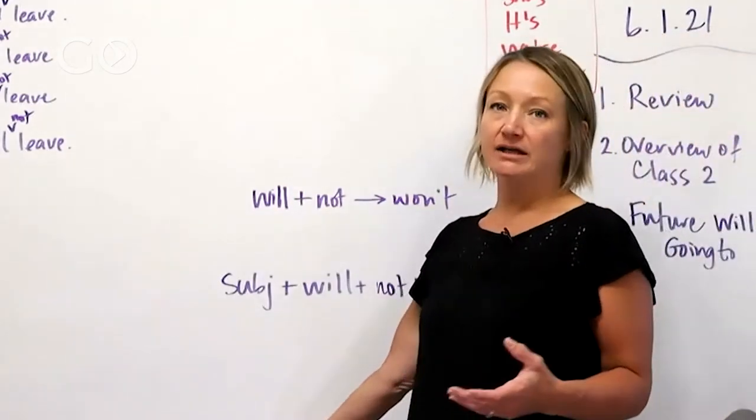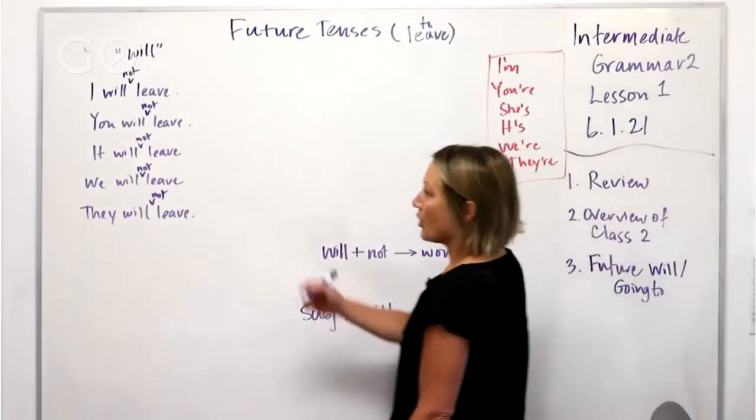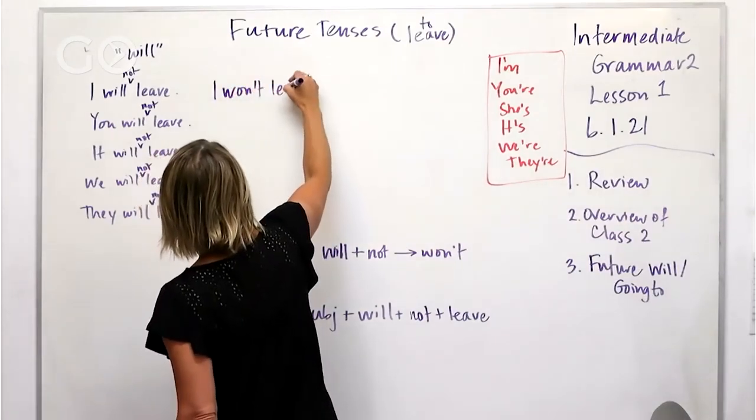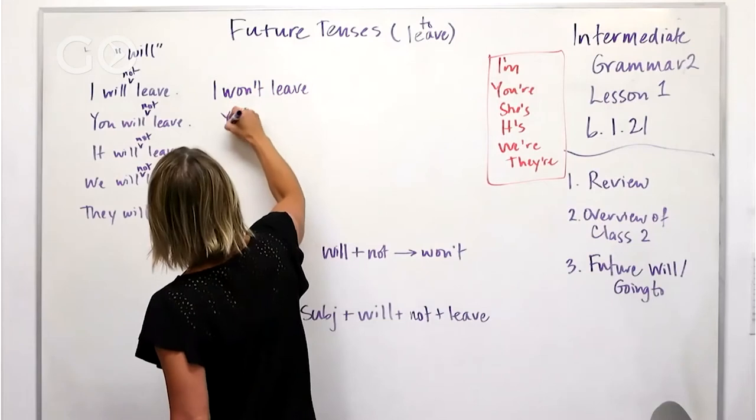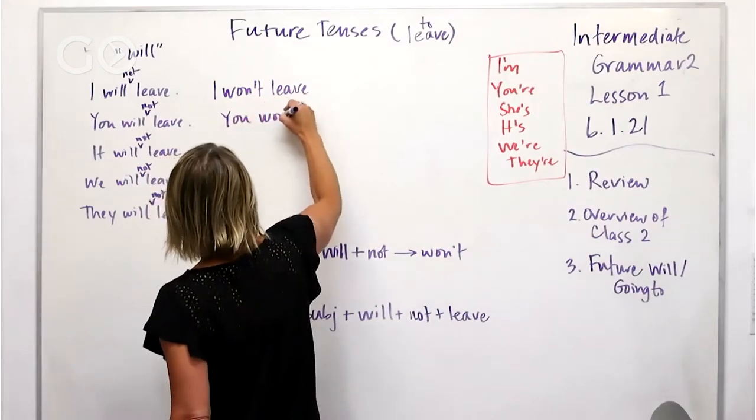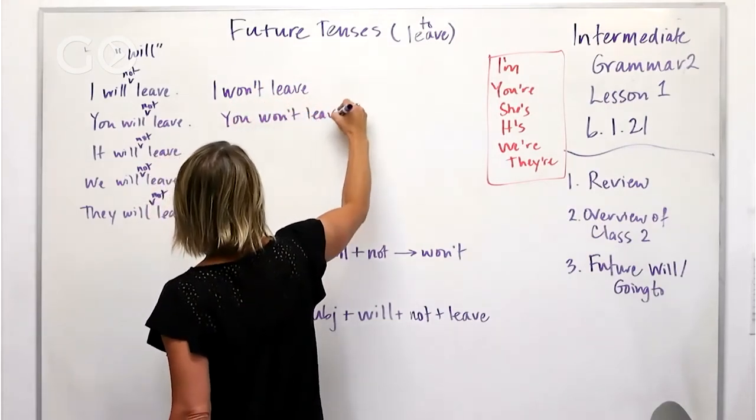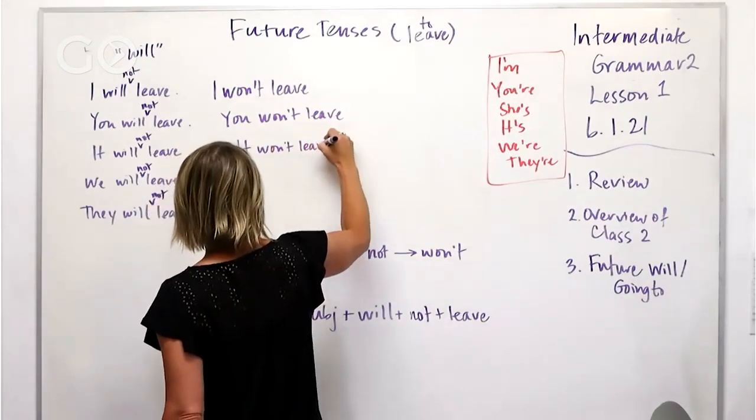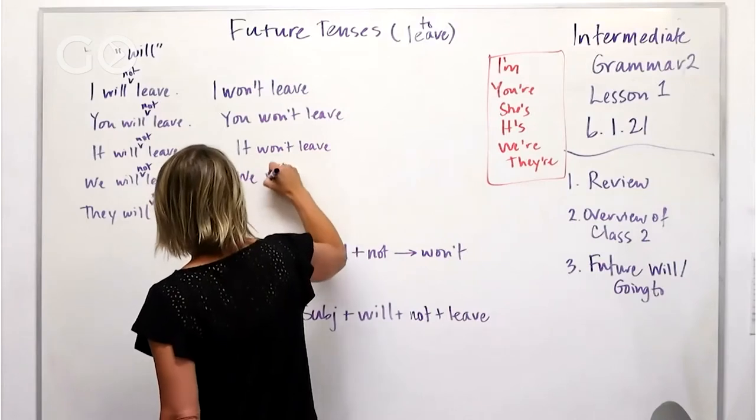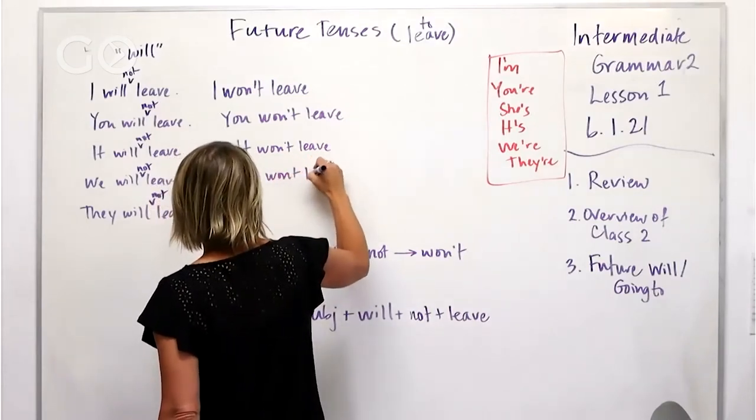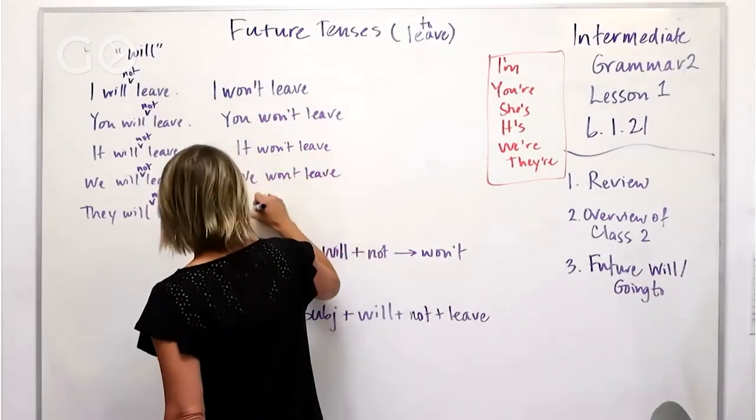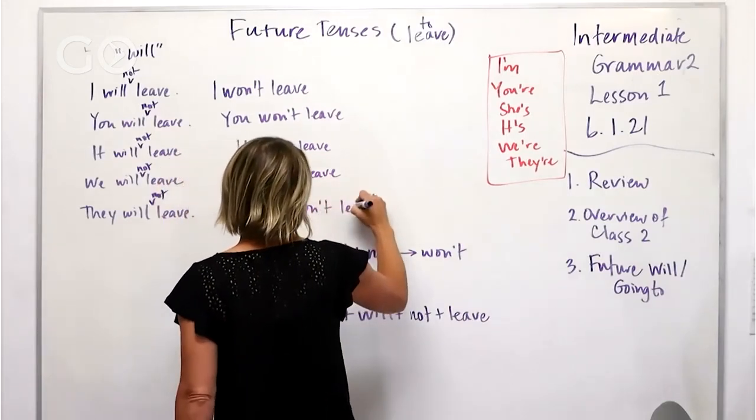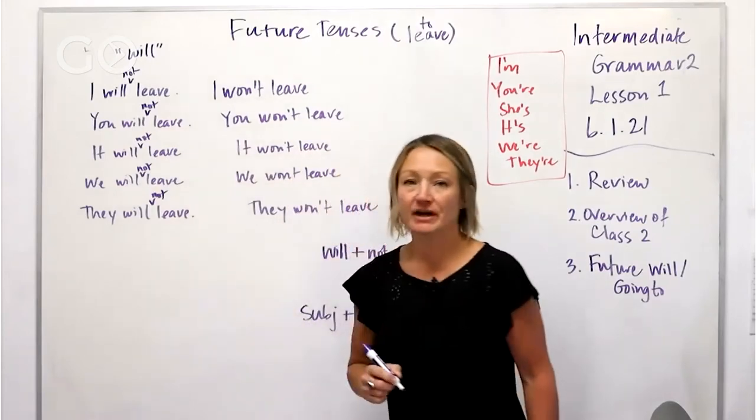Okay, so the contraction for will and not is won't. So I won't leave, I won't leave, you won't leave, it won't leave, we won't leave, and they won't leave.